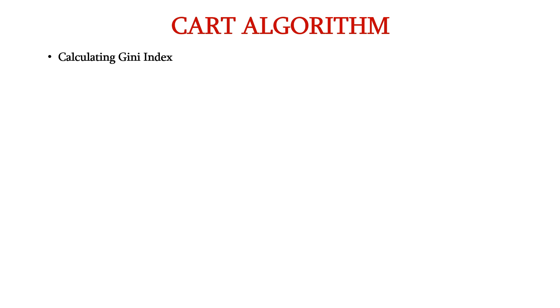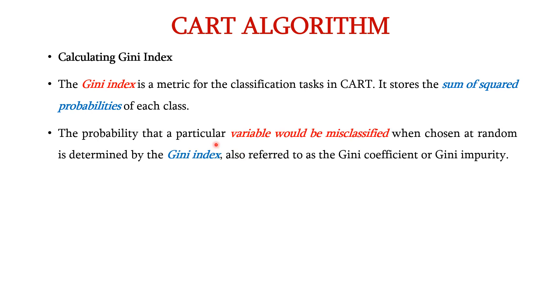Now, let us understand Gini index and its calculation. Gini index is a metric used for the classification task in CART. It stores the sum of squared probabilities of each class. The probability that a particular variable would be misclassified when chosen at random is determined by the Gini index.